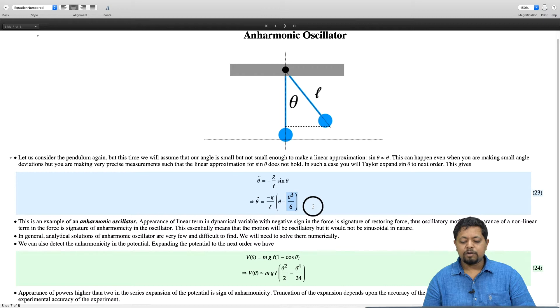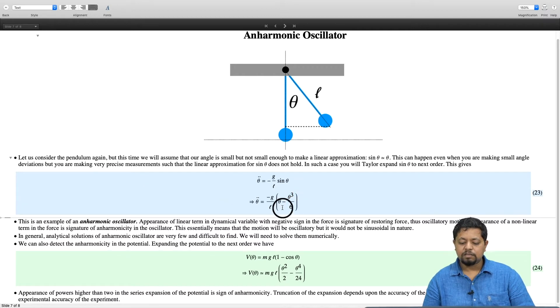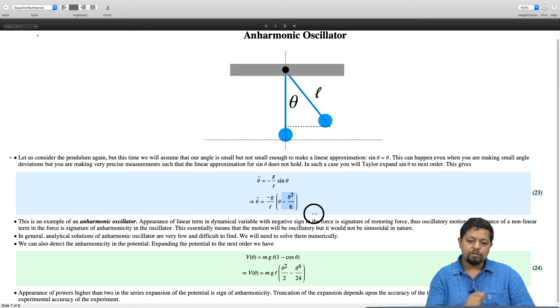And the two particular features that are notable in this equation: one is that the dominant term is the linear restoring force, that is the first term in the force is proportional to the linear term theta with a negative sign. So, it is a linear restoring force as a first approximation and the correction is given by theta cube by 6 which is not a linear term, therefore this is anharmonic. So, we expect an oscillation to go back and forth but not like a sinusoidal oscillation but something more general in nature.